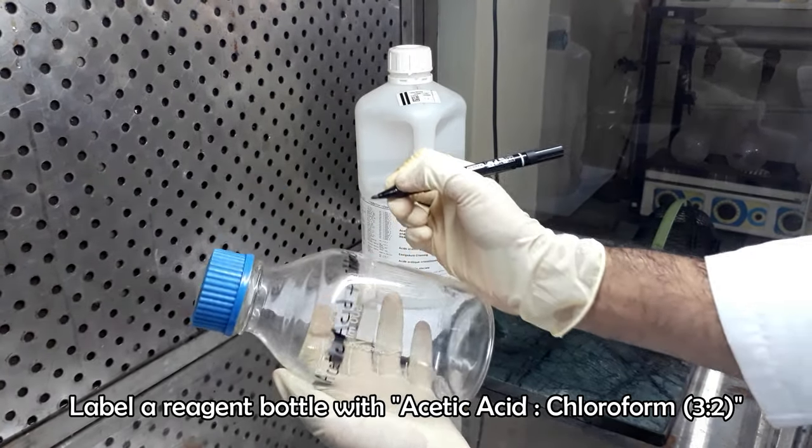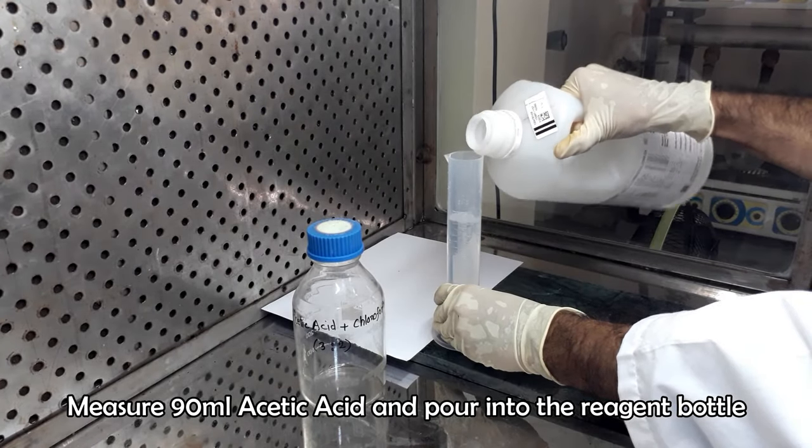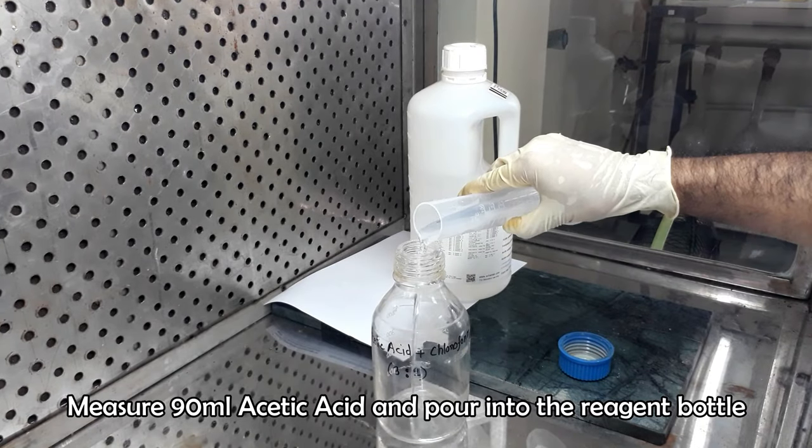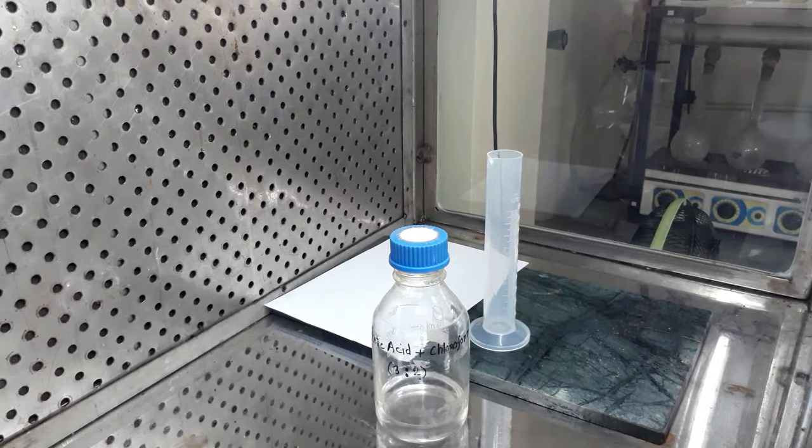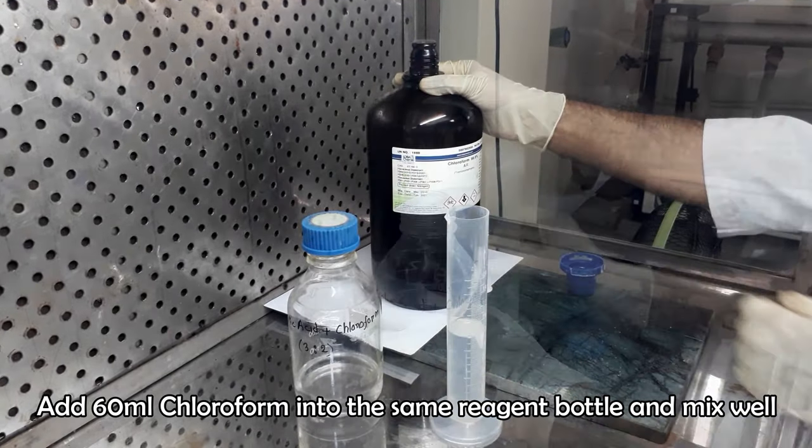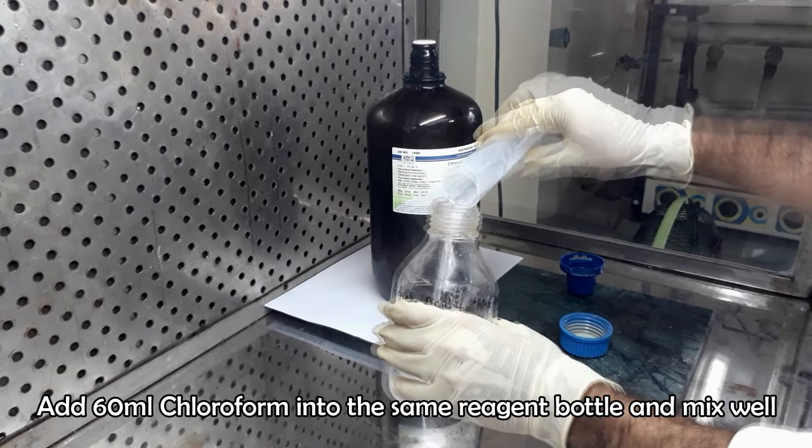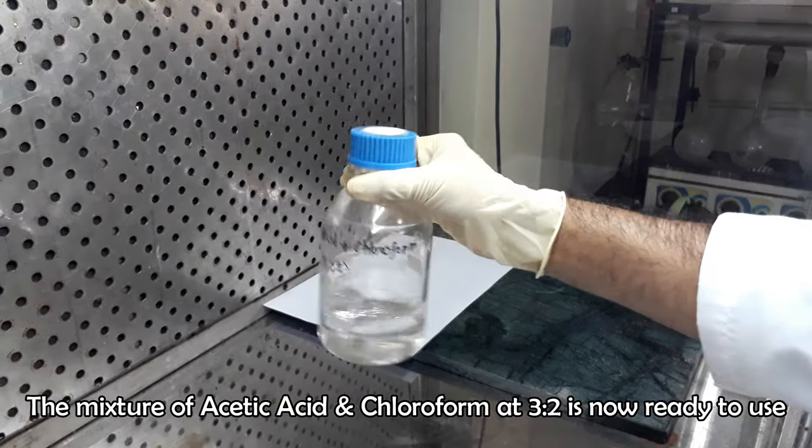Acetic acid and chloroform should be mixed in ratio of 3 to 2. Measure 90 ml of concentrated acetic acid and take it in the pre-labeled reagent bottle. Now measure 60 ml chloroform and pour into the same reagent bottle. Shake the bottle to mix the chemicals.